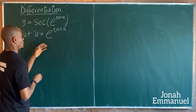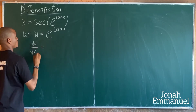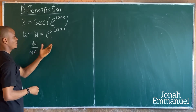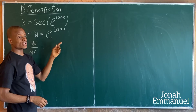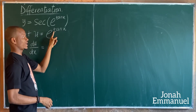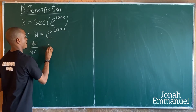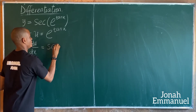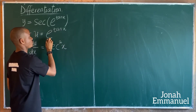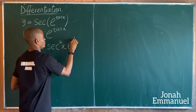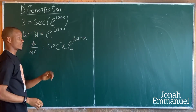To differentiate this, the shortcut for exponential differentiation is simply to differentiate the index. Differentiating tan x gives sec squared x, and then repeat the exponential tan x. So du/dx equals sec squared x times exponential tan x.